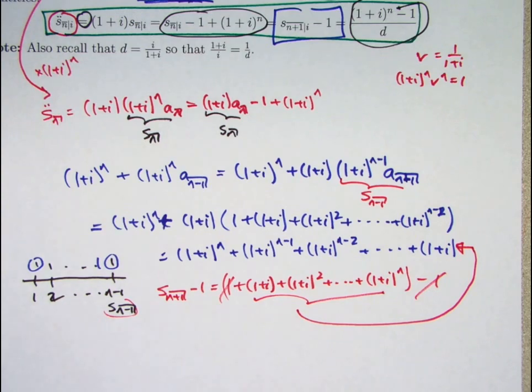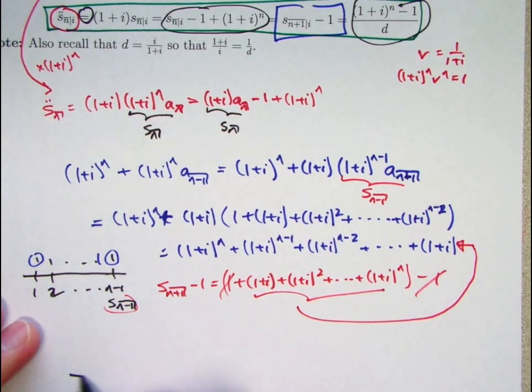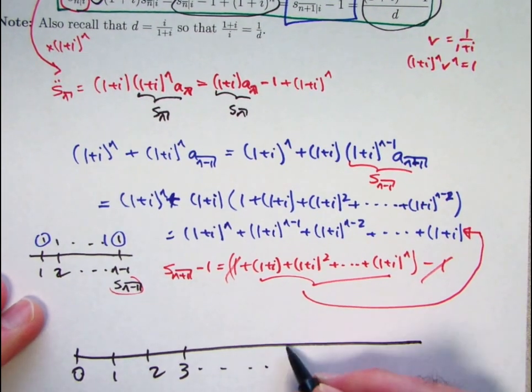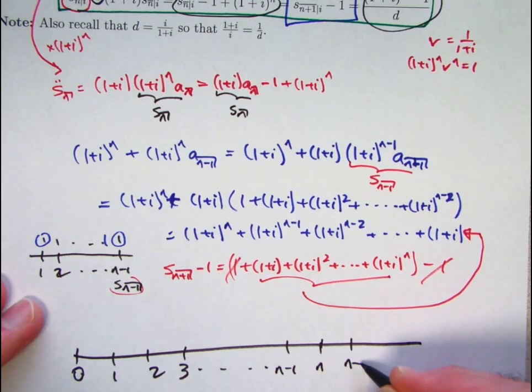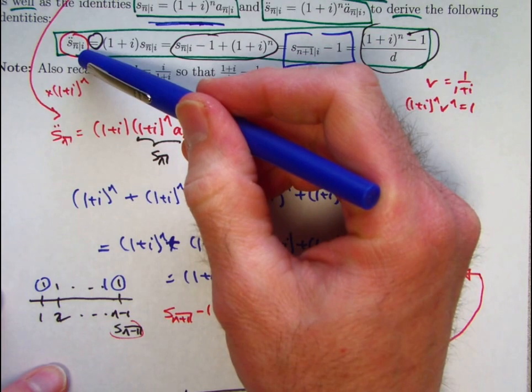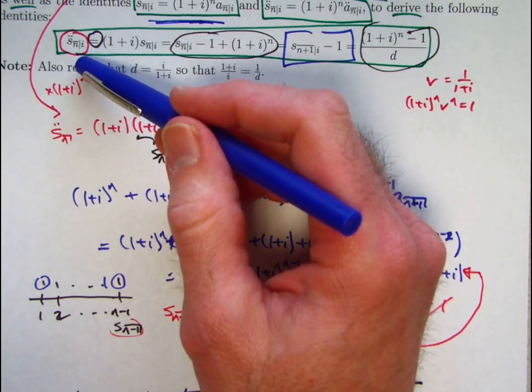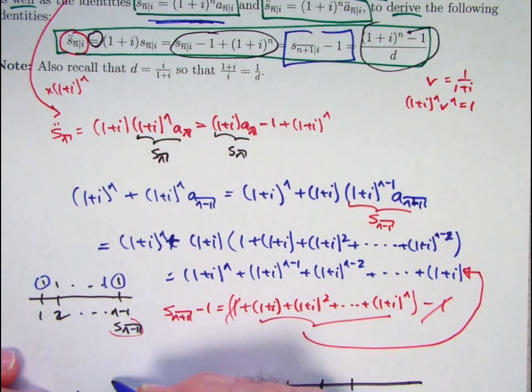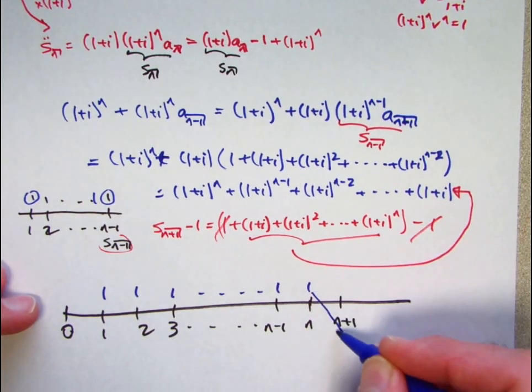Let's end the video by thinking about the meaning of the equality between these things with the number line. Here's time 0 time 1 time 2 time 3 etc. Let's make this be time n minus 1 time n and time n plus 1. All right s_n double dot future value of an annuity due. The present value of an annuity due is evaluated in time right before the first payment. This one has to be n years later so it has to be evaluated one period after the last payment. If my payments are at 1, 2, 3 through n, s_n double dot has to be evaluated at time n plus 1.